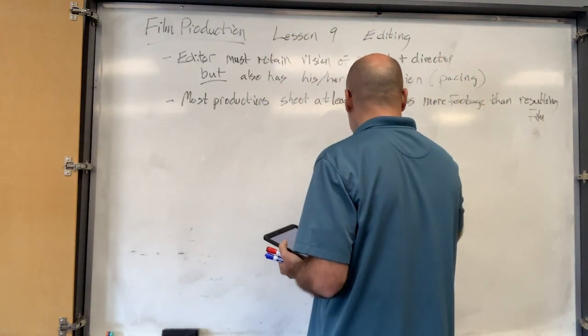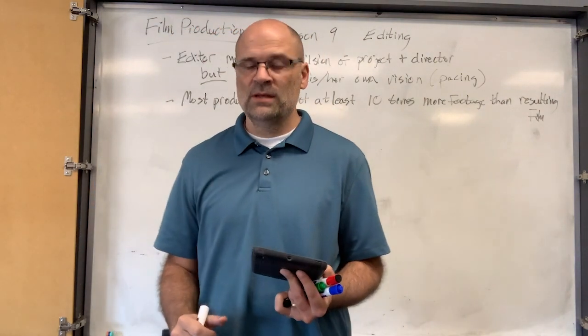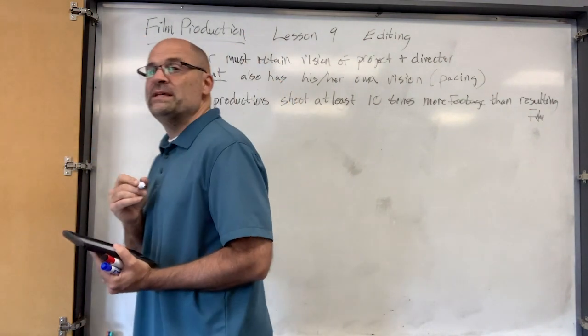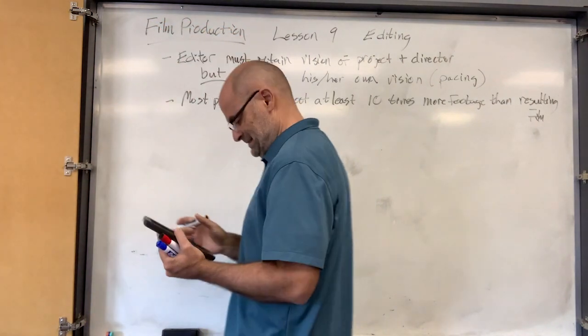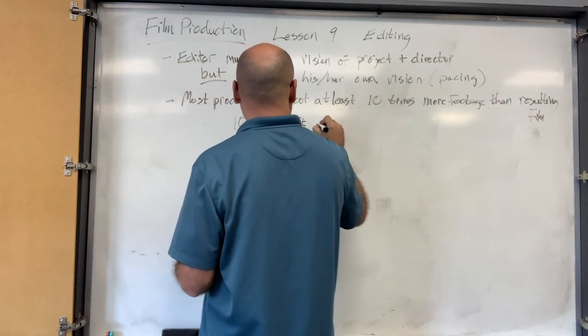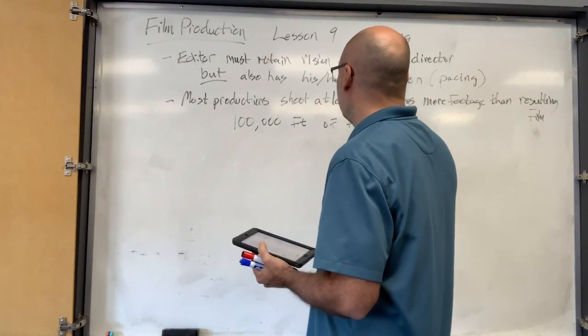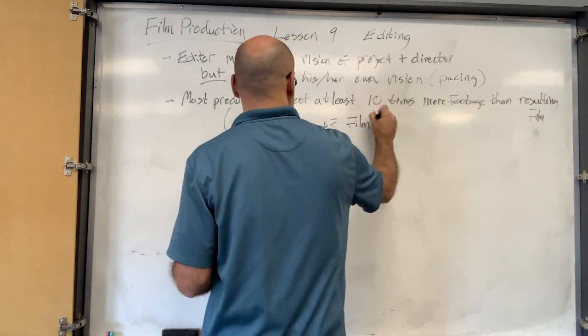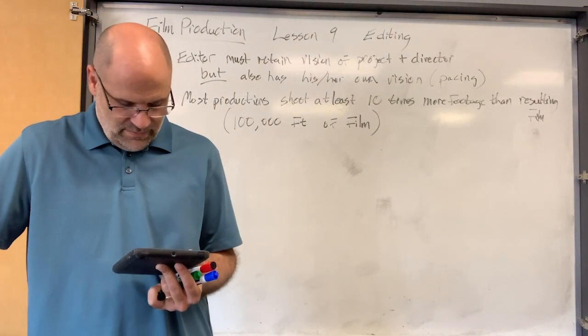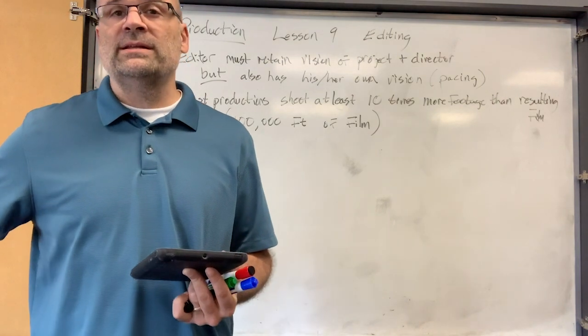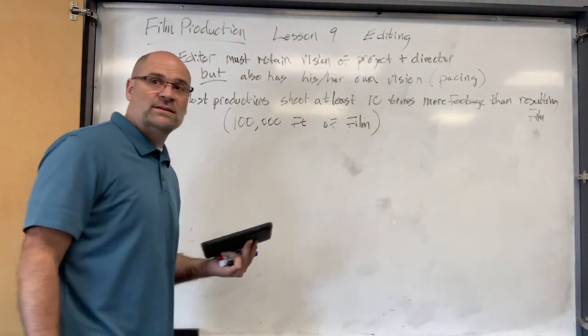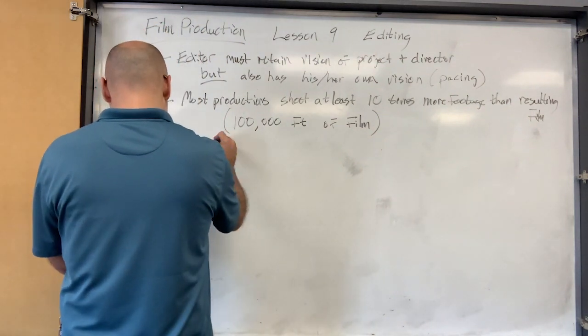Do you know how long, like if we shot with actual film, what a typical movie would be? You know how many feet of actual film? 100,000 feet of film. Isn't that crazy? So here's the deal. If you're an editor, you have to be organized. If you're not, then this 100,000 feet is going to stress you out.